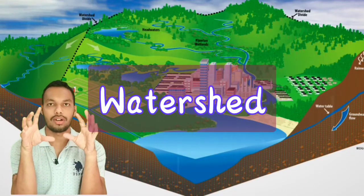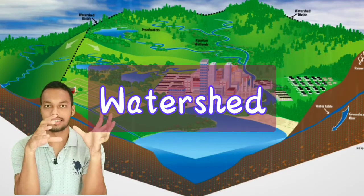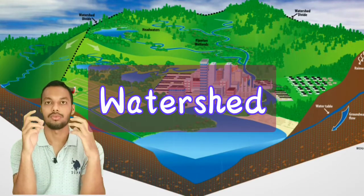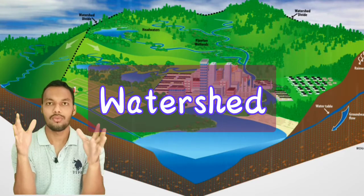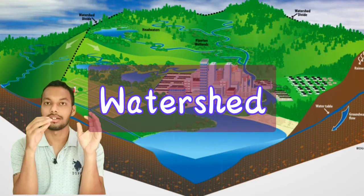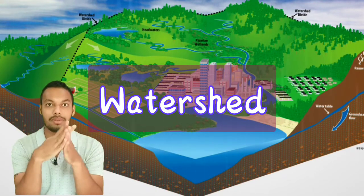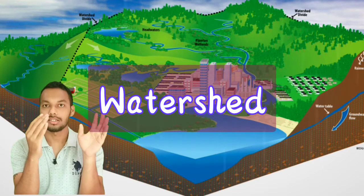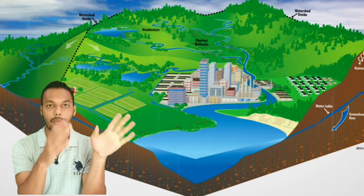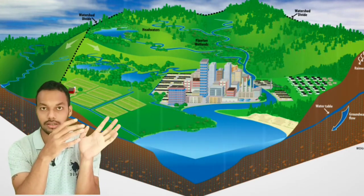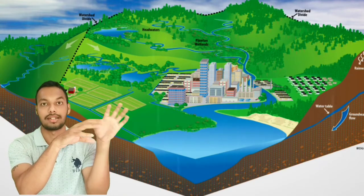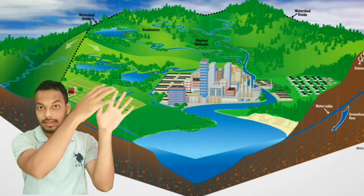Today I will tell you what is a watershed. We have heard the terms watershed and watershed management. Watershed is a drainage basin — that area from where runoff water, that is water from rainfall that is not percolated into the soil, originates.